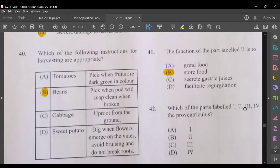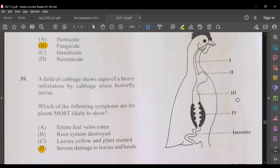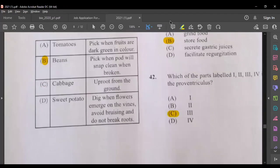Which of the parts labeled 1, 2, 3, or 4 is the proventriculus? The proventriculus should be 3. So structure 3 would be the proventriculus.